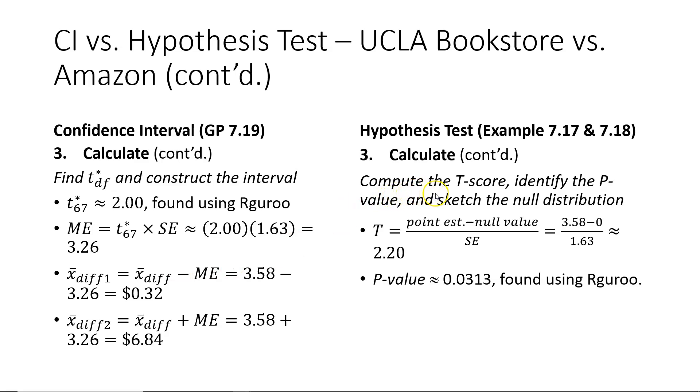Otherwise, pointing out the differences again for the hypothesis test in the book, you find a capital T score, and then you use that with Rguroo to find a p-value or probability value. On the left, we find a t asterisk score using Rguroo, and then use that for our calculations along with the point estimate, the sample mean value, to calculate our confidence interval endpoints.